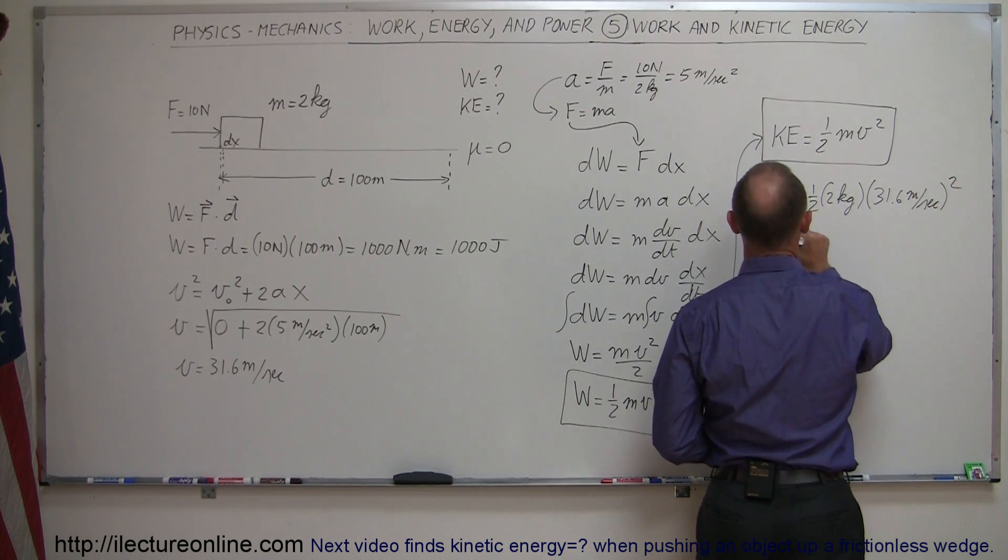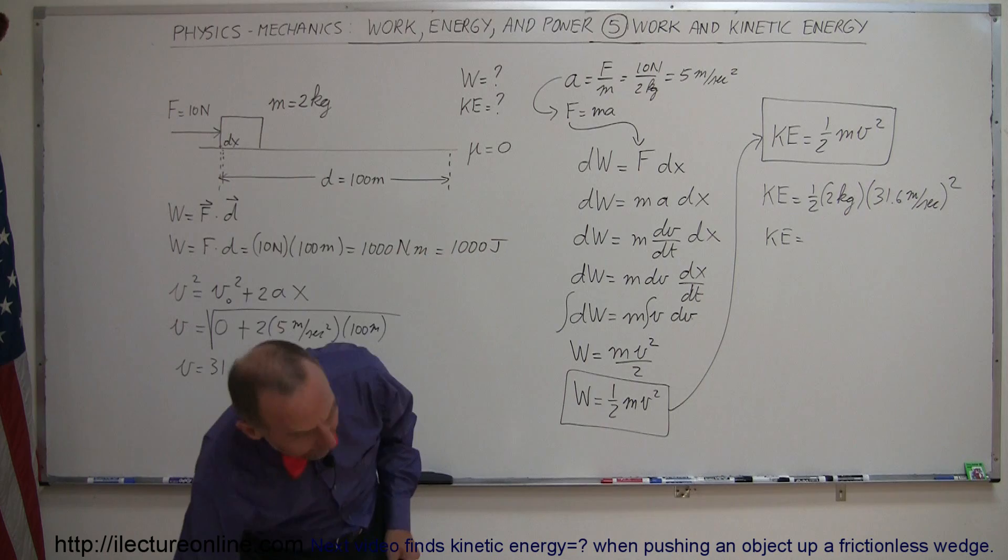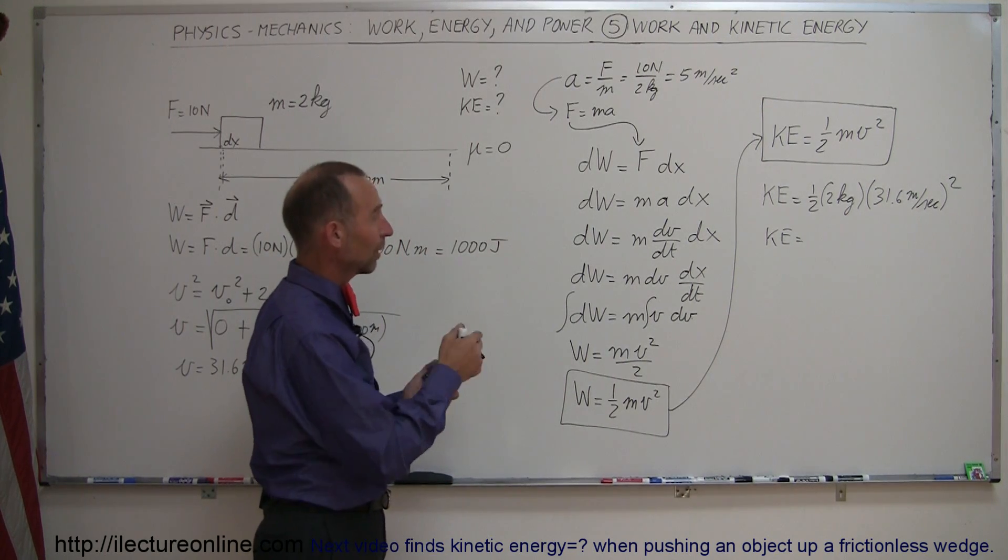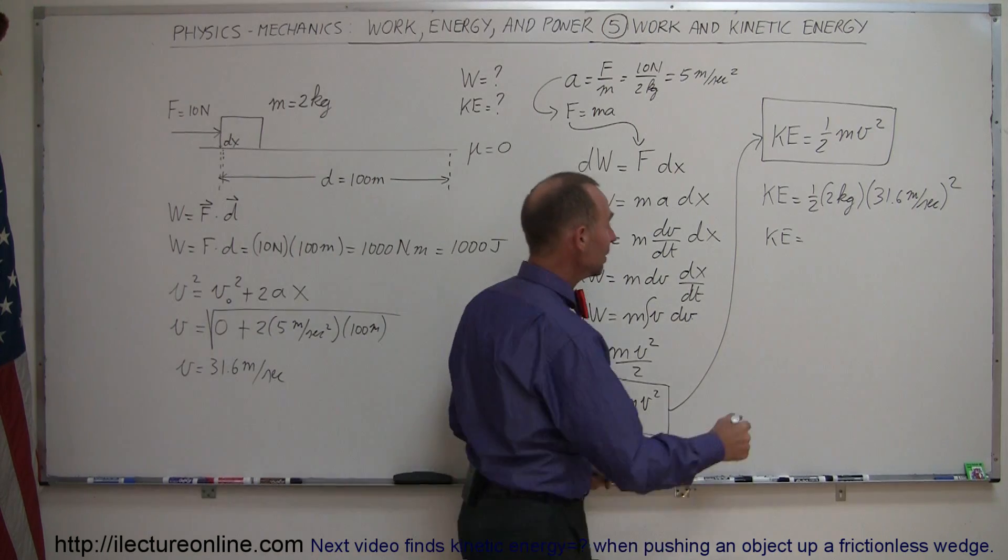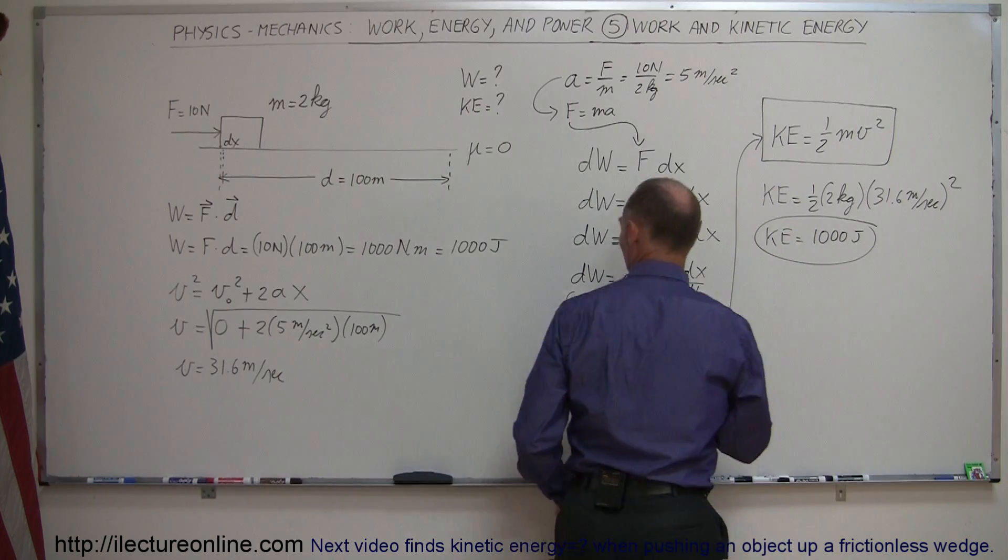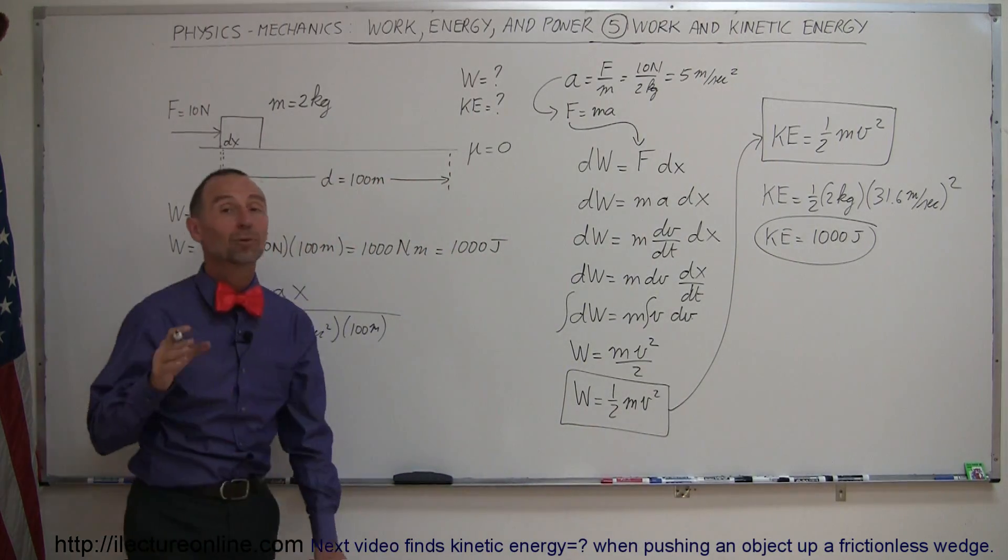And, if we remember right, if we square the number that we obtained before, we should get a thousand times one half times two. Indeed, kinetic energy is one thousand joules, which is what we suspected, because we knew that's how much work we did.